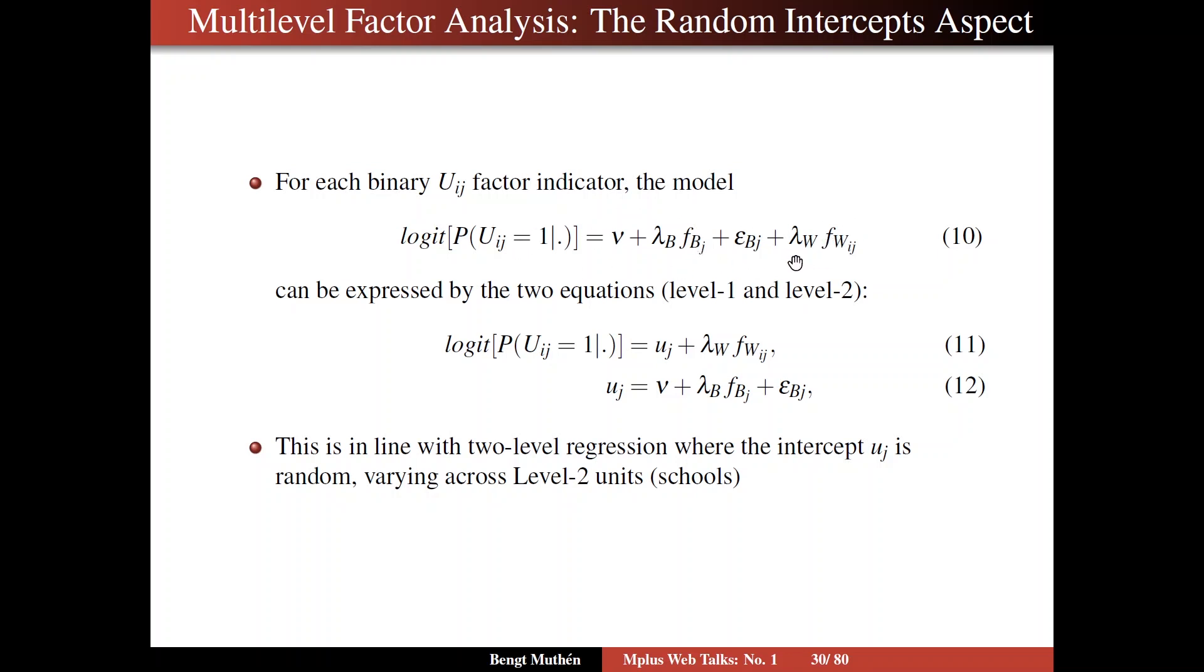Now we can write this model, which at first we think of as a factor model for a between-level covariance matrix and a factor model for a within-level covariance matrix. You can instead express it by two equations, like this, where u sub j is seen as a random intercept for this item in this school, and that random intercept has an intercept nu and then is regressed on the between-level factor and its residual. So if you plug 12 into 11, then you get 10.